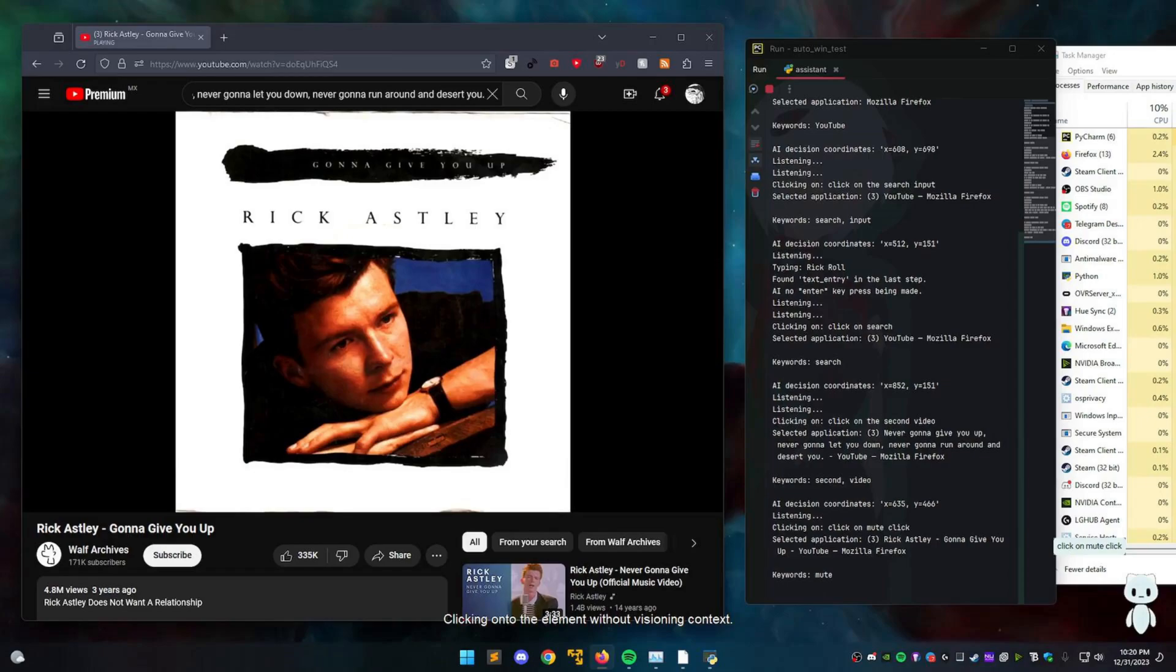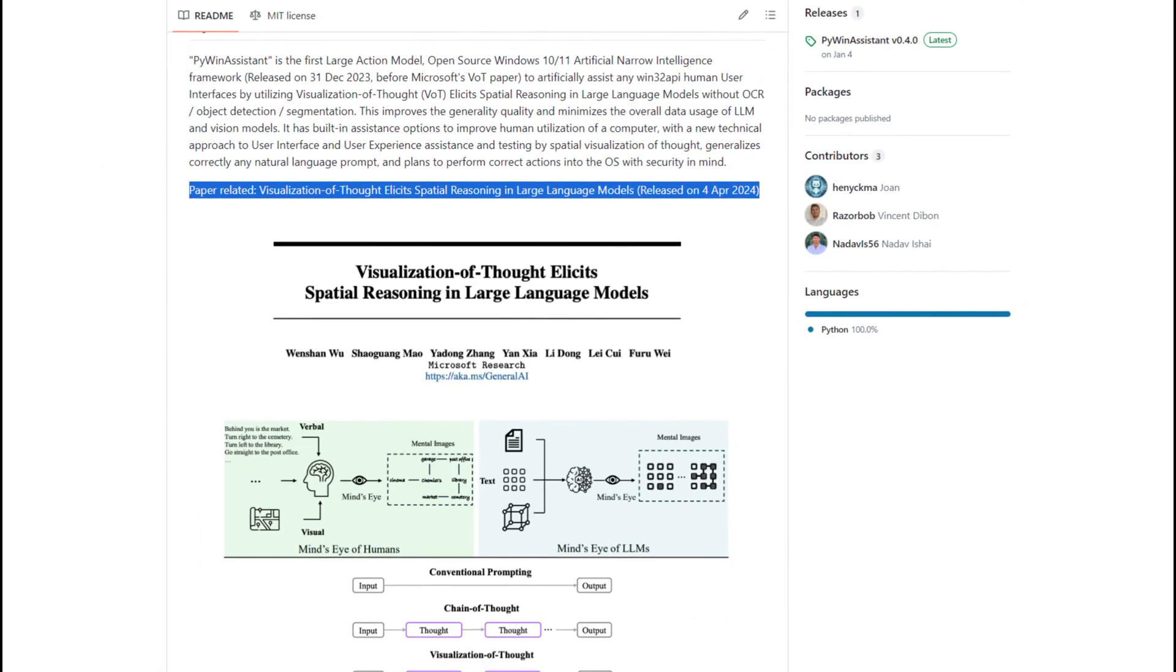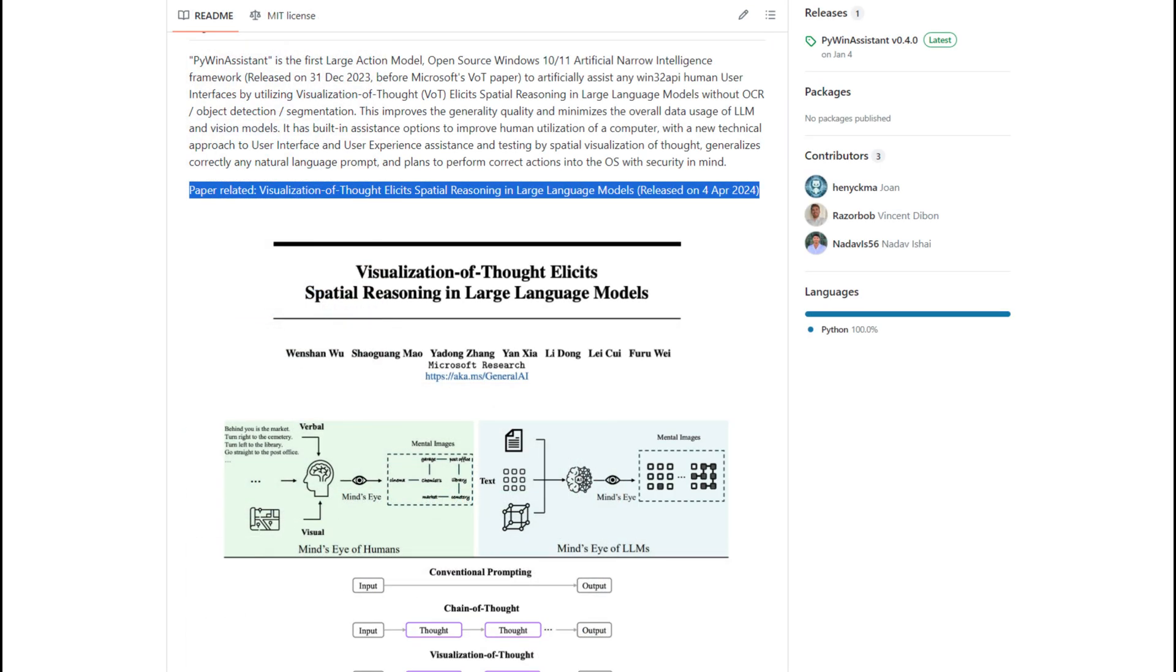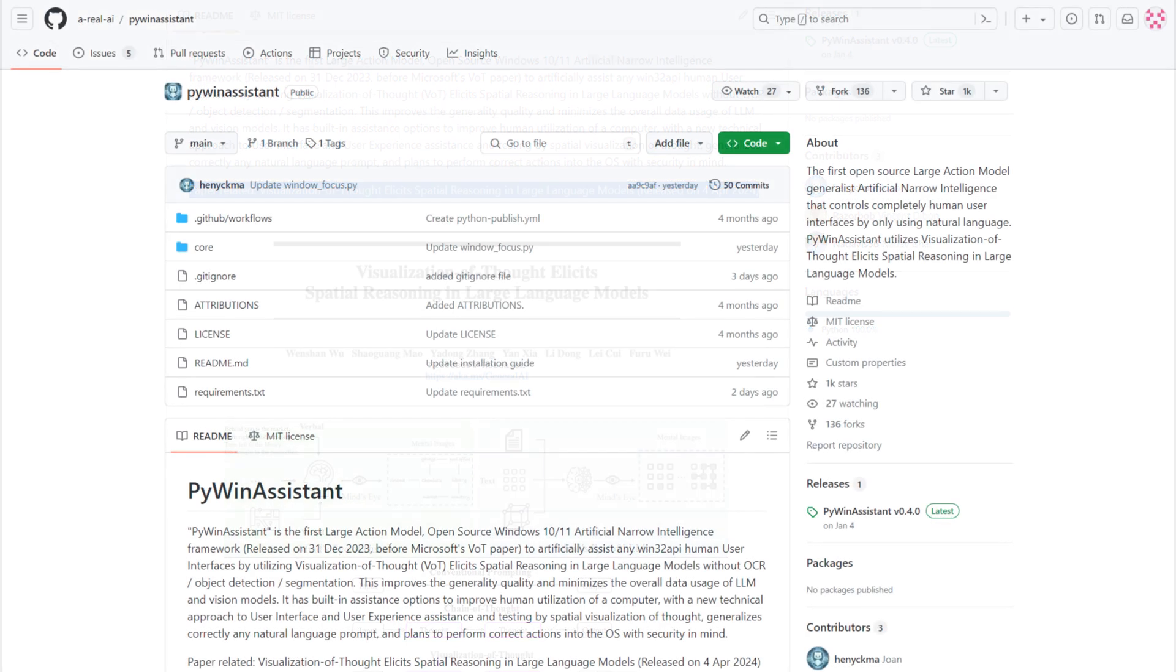We're simply instructing it on what actions to perform, and it manages to execute them effectively. This essentially functions like an open interpreter, and it performs remarkably well. It can interact with elements without needing visual context. The process involves explicitly directing it step-by-step on what needs to be done. It doesn't have prior training on screen content or clicking mechanics. It's figuring it all out as it proceeds, visualizing each step. They reference a paper that outlines similar techniques for controlling a Windows environment. So not only did Microsoft publish a research paper detailing their methods, but they also released this open-source project that you can download and start using immediately. I'll be demonstrating that for you today.